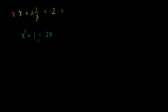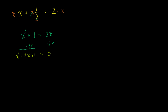And this is starting to look like our standard quadratic equations. We just have to subtract 2x from both sides. If we do that, the left-hand side of our equation becomes x squared minus 2x plus 1, and the right-hand side is equal to 0.